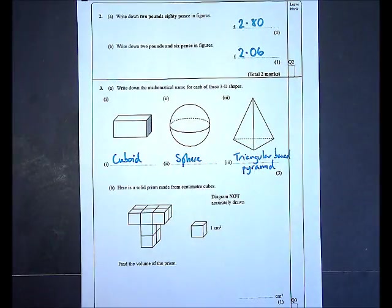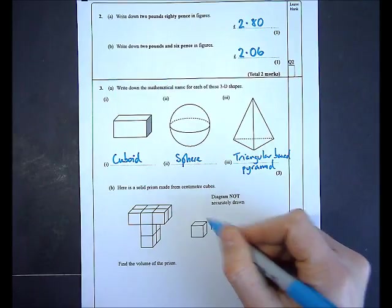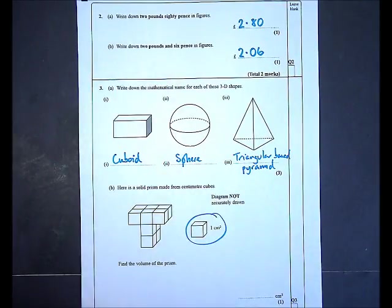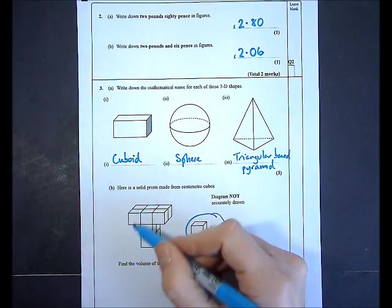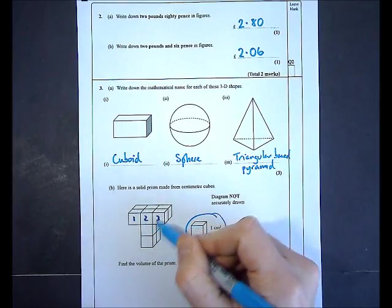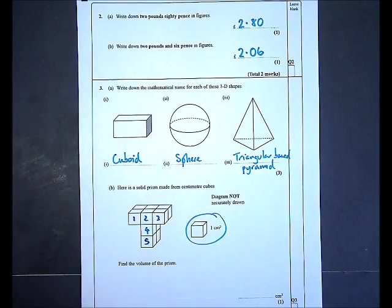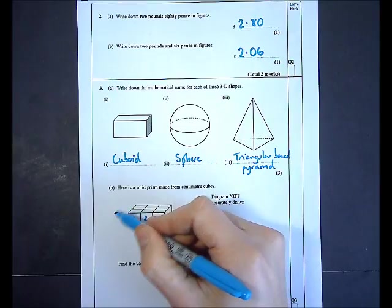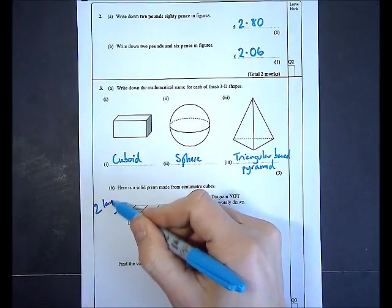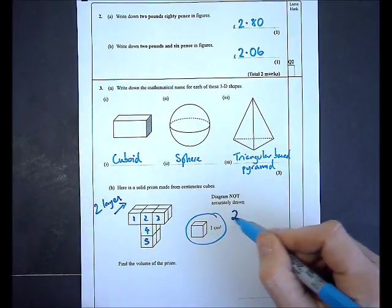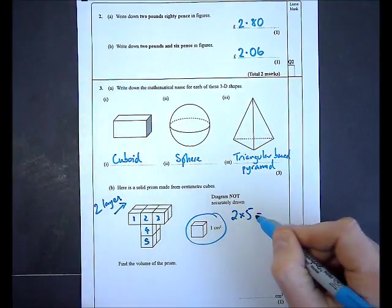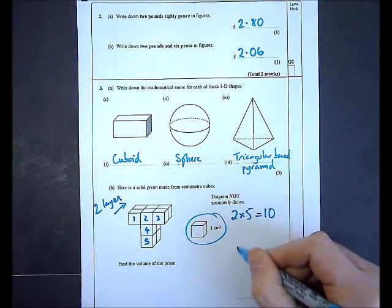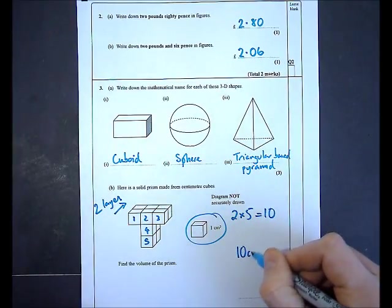In part B I'm shown a solid prism made from centimetre cubes and I'm asked to find the volume of the prism. I'm told that one centimetre cubed is the same as one box. Looking at the front of the diagram I've got 5 boxes at the front and that goes backwards for two layers. So I've got 2 lots of 5, giving a total volume of 10 centimetres cubed.